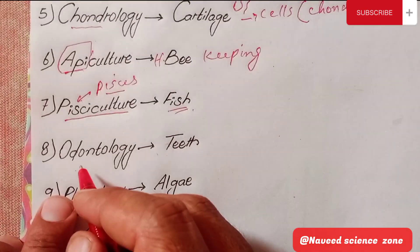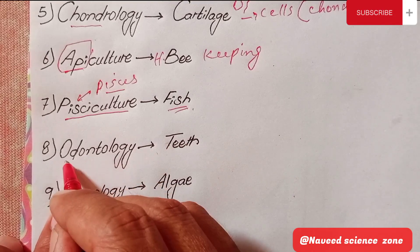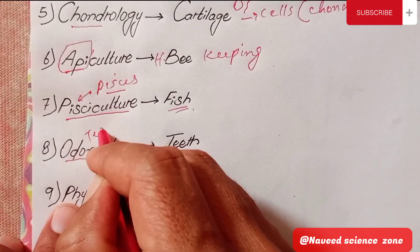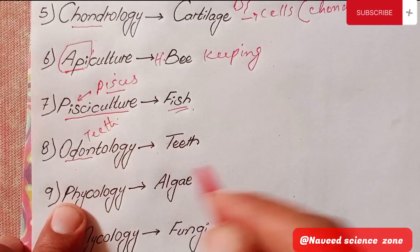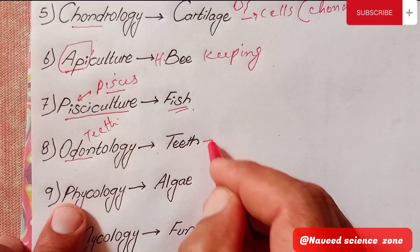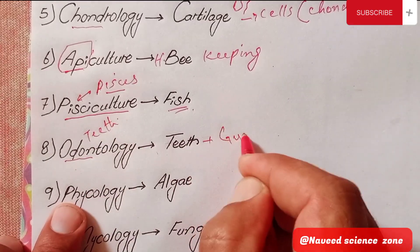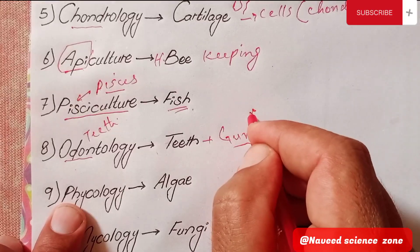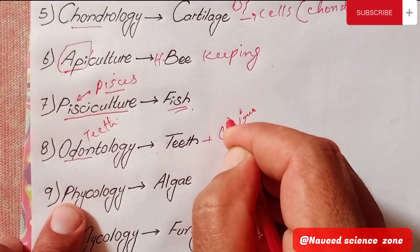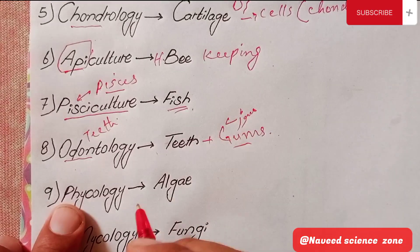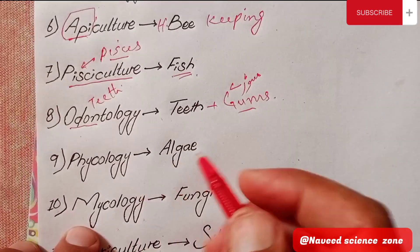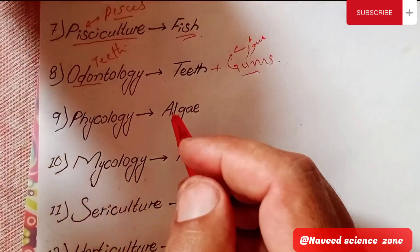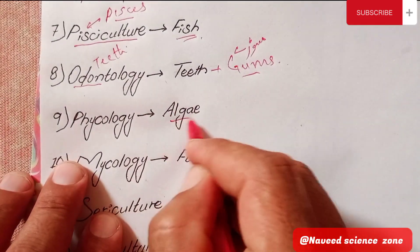The next branch is Odontology. Odon means teeth, so Odontology is the study of teeth and gums. Gums are also known as masore. Odontology is the branch of biology dedicated to the study of teeth and gums.